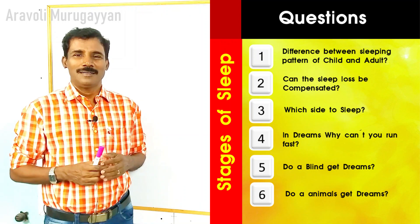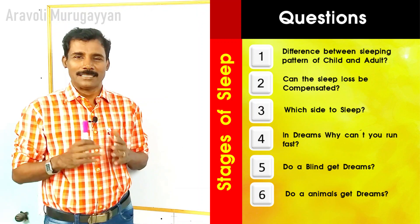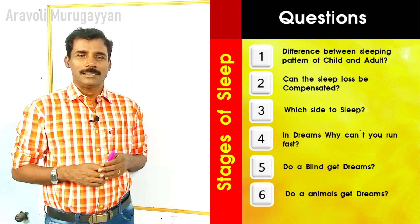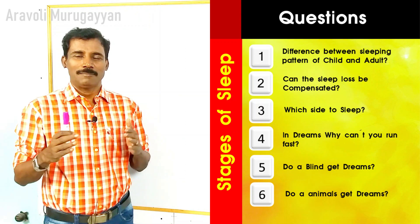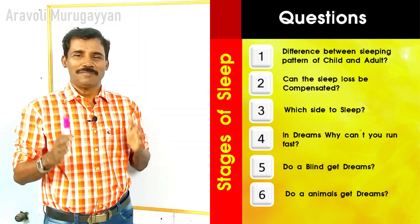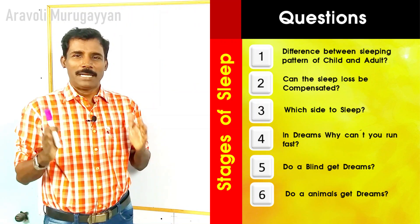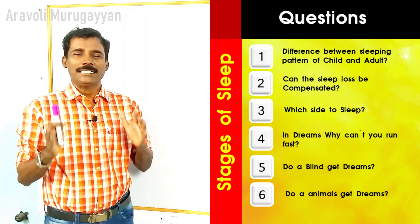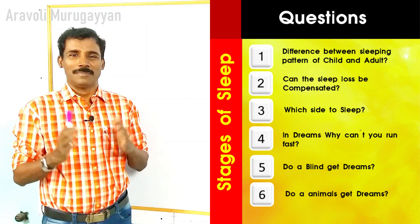For example, what is the difference between the sleeping pattern of a child and an adult? Which side do you have to sleep — right side or left side? If your sleep is deprived for some reasons, can you compensate by sleeping the next day? Why can't we run fast in dreams? Can a blind person who has been blind since childhood get dreams? And finally, do animals also dream like human beings?